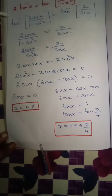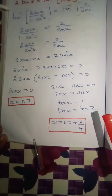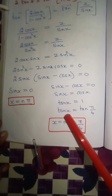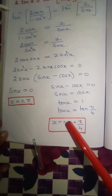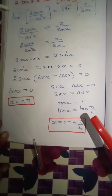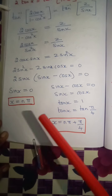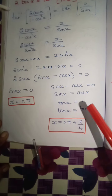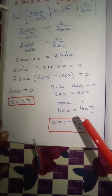Using the trigonometric equation formula for tan: if tan x equals tan theta, then x equals n pi plus theta. Since the angle here is pi by 4, the solution is x equals n pi plus pi by 4. So the two solutions are: x equals n pi (from sin x equals 0), and x equals n pi plus pi by 4 (from tan x equals tan pi by 4).